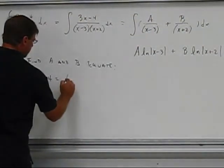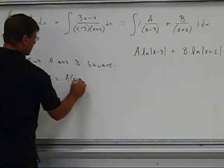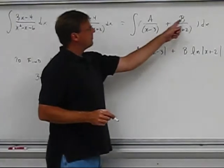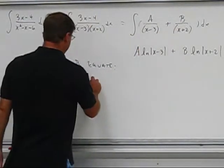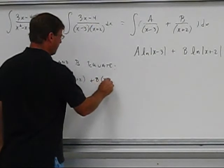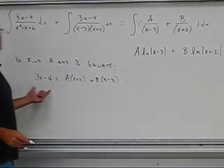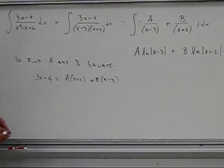I would multiply this x plus 2 times a, so this would be part of the numerator, a times x plus 2, and then b times the other term, x minus 3, so these would be the two numerators of those fractions, and I need them to be equal.